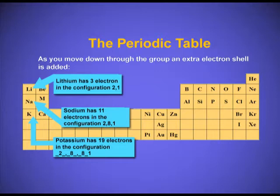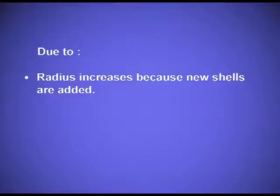The increase in the number of shells is responsible for the increase in atomic radii — the radius increases because new shells are added. The shielding effect, also known as the screening effect, plays a role here. The inner electrons act as a wall — they screen the nuclear charge from reaching the valence electrons. These inner electrons act as a hurdle and the effective nuclear charge does not reach the valence electrons, hence there is an expansion in the electron cloud, which is also responsible for the increase in atomic radii.